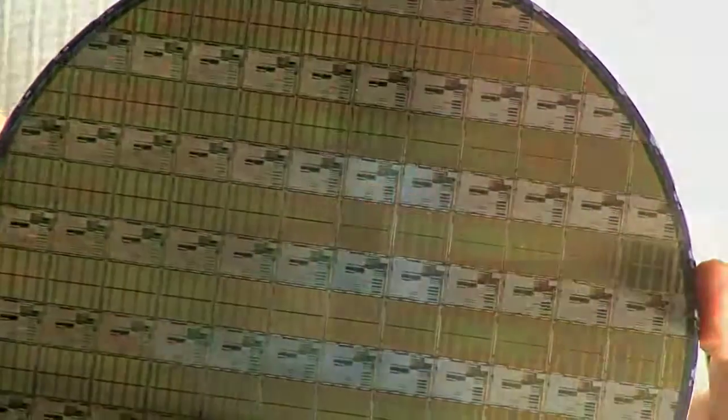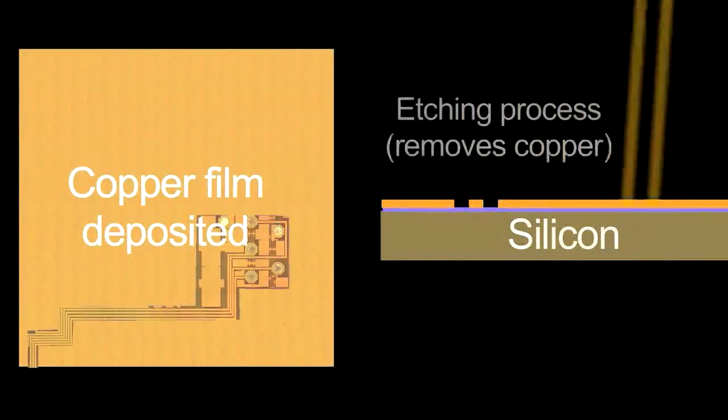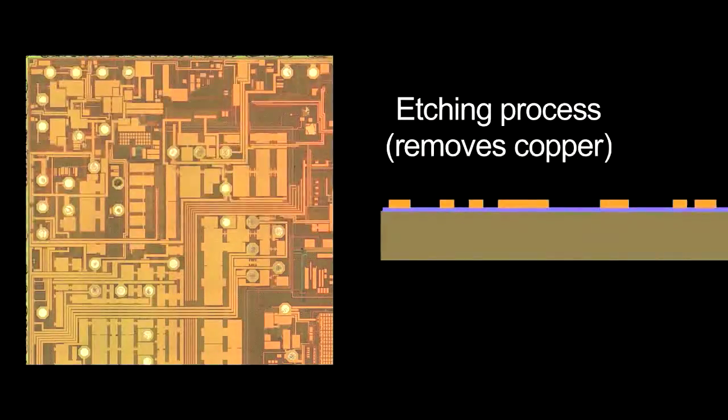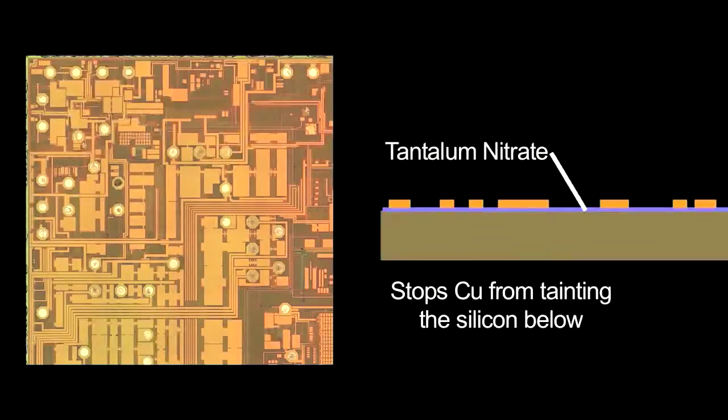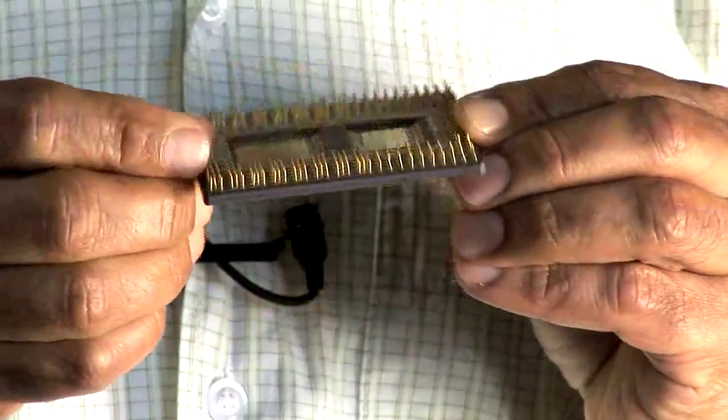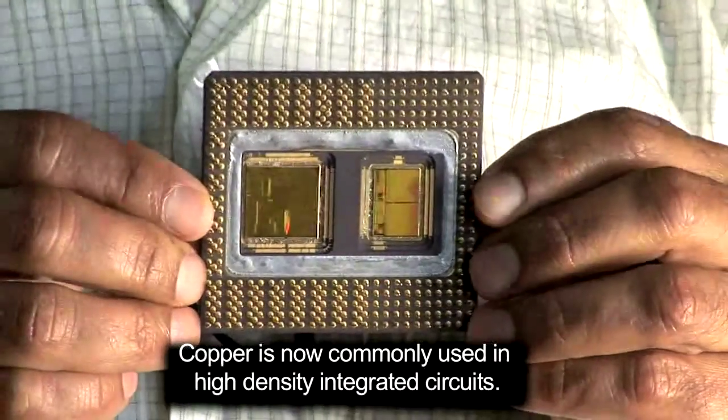But these days, people figured out how to deposit copper, how to remove copper, and by using special materials like tantalum nitrate, people could prevent copper from moving all over the place. So copper is much more common nowadays in very high density integrated circuits.